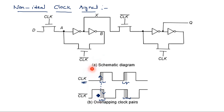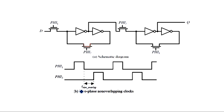There exists a time gap between clock and clock-bar. Normally, when the clock transitions 0 to 1, clock-bar should transition 1 to 0 at the same instant, but it has some delay. These are non-ideal clock signals, and when applied to these devices the operation will not be as required.